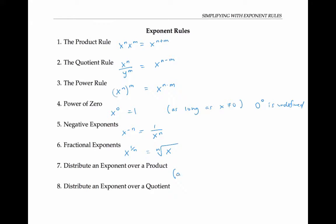We can distribute an exponent over a product: a times b to the n is equal to a to the n times b to the n. And we can distribute an exponent over a quotient: a over b to the n is a to the n over b to the n. In the rest of this video, we'll use these exponent rules to simplify expressions.